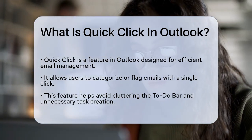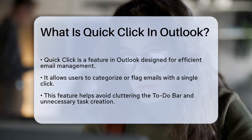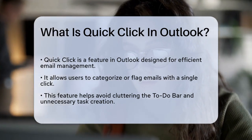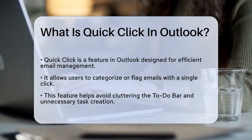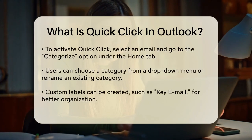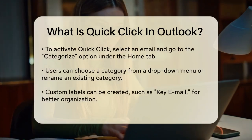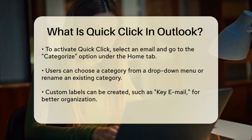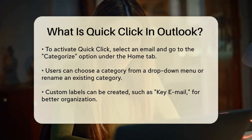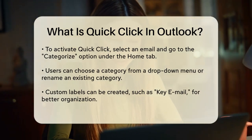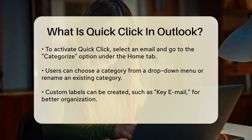To use Quick Click, you start by going to an email folder and selecting an email message. Then you click on the Categorize option in the Tags group under the Home tab and select Set Quick Click. Here, you can choose a category from a drop-down list or even rename an existing category to something more meaningful to you.